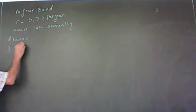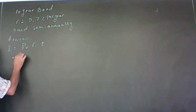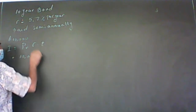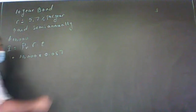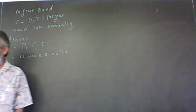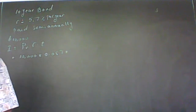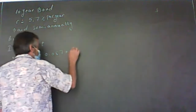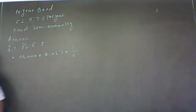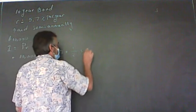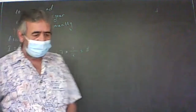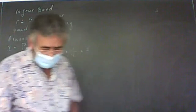We use the same formula: I = PV × R × T. In this case, it is 10,000 times R — which is 0.057, converting to decimal — times the time. Since we're looking at every six months, and six months is half a year, we say times 1/2, or equivalently 6/12. When we multiply this, he ends up getting $285.